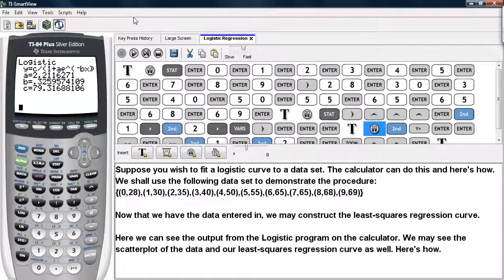We can see the output. We have y equals this logistic style function, where you have c divided by the sum of 1 plus a times e (that's the 2.718 number) raised to the negative bx.